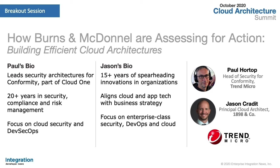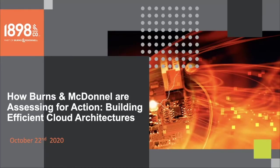Paul and Jason are going to cover how Burns and McDonnell are assessing for action and building efficient cloud architectures. With the rapid provisioning capabilities of cloud infrastructures, security and cloud development teams are often overburdened with cloud sprawl and the intricacies of setting up the cloud securely. They'll show how Cloud One is helping companies automatically assess and improve their environment for innovation and operational excellence. You can download the slides and submit questions via the view screen.